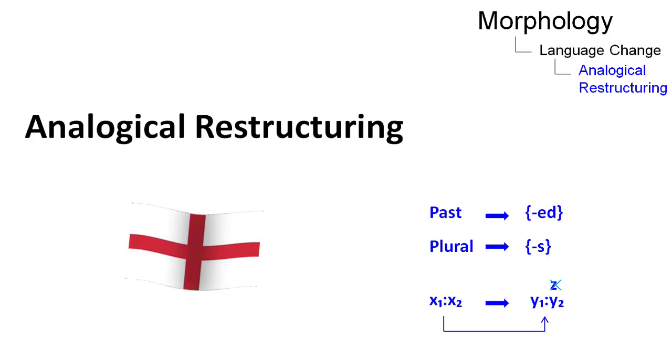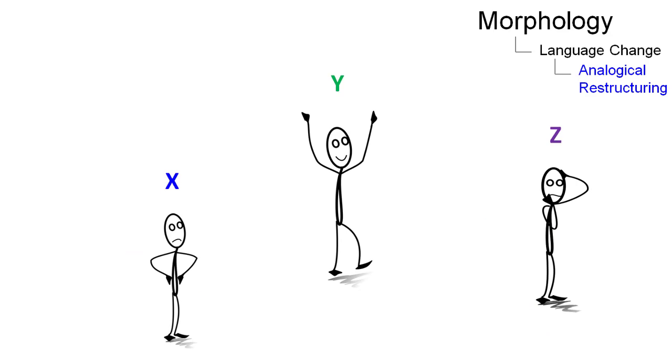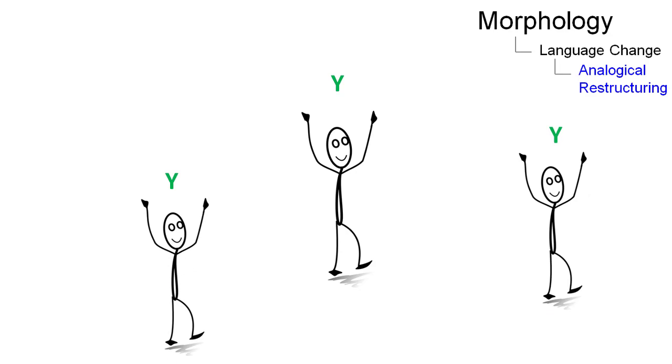A vast number of morphological changes in language can be attributed to a linguistic process known as analogy. In analogical restructuring, irregular patterns are invented to conform with regular patterns that already exist in the language.